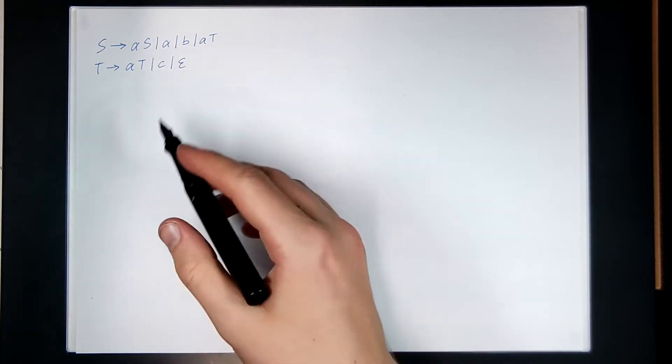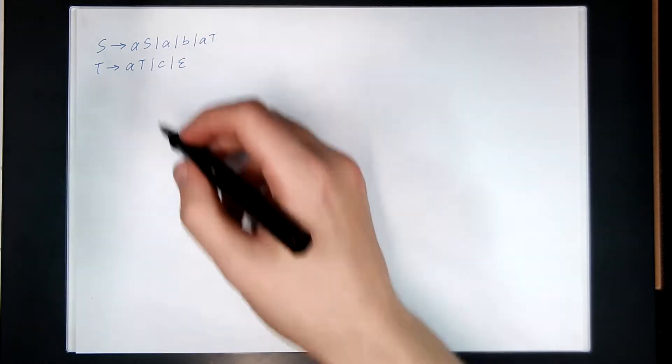Let's do another example of converting a right linear grammar to an NFA. I've chosen this grammar to try and include as many gotchas as possible, as many of the tricky edge cases.